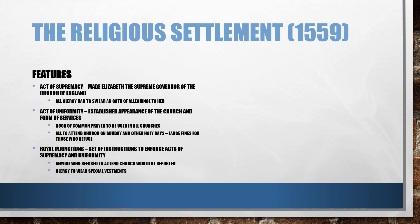In addition to the acts, there were royal injunctions which were basically a set of instructions to enforce the Acts of Supremacy and Uniformity. Those that refused to attend church would be reported to the Privy Council, and the clergy were ordered to wear special clothing.